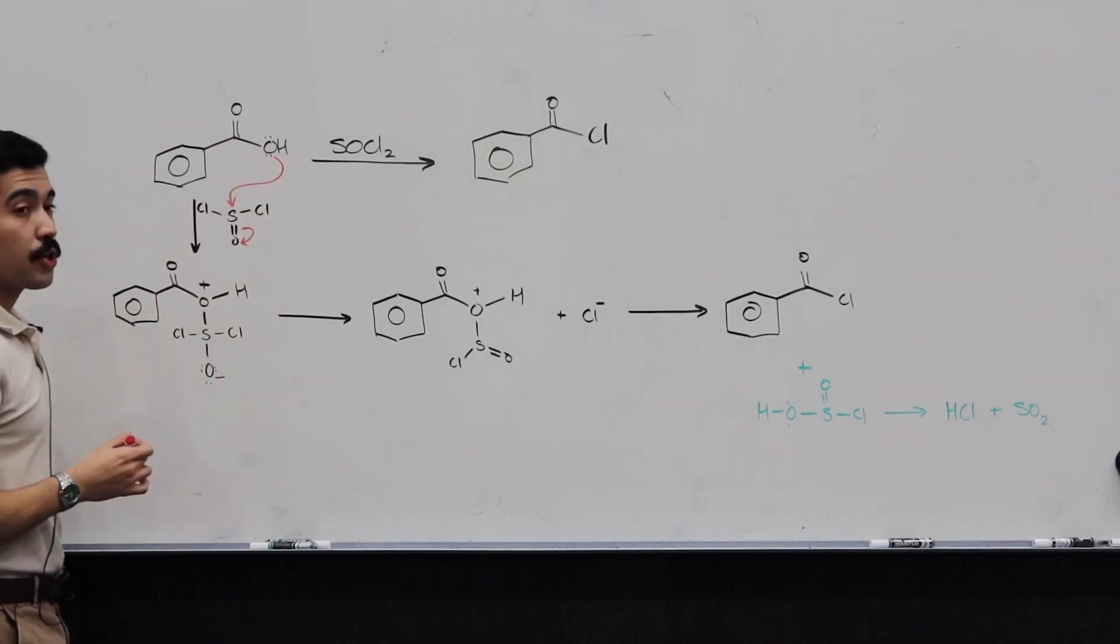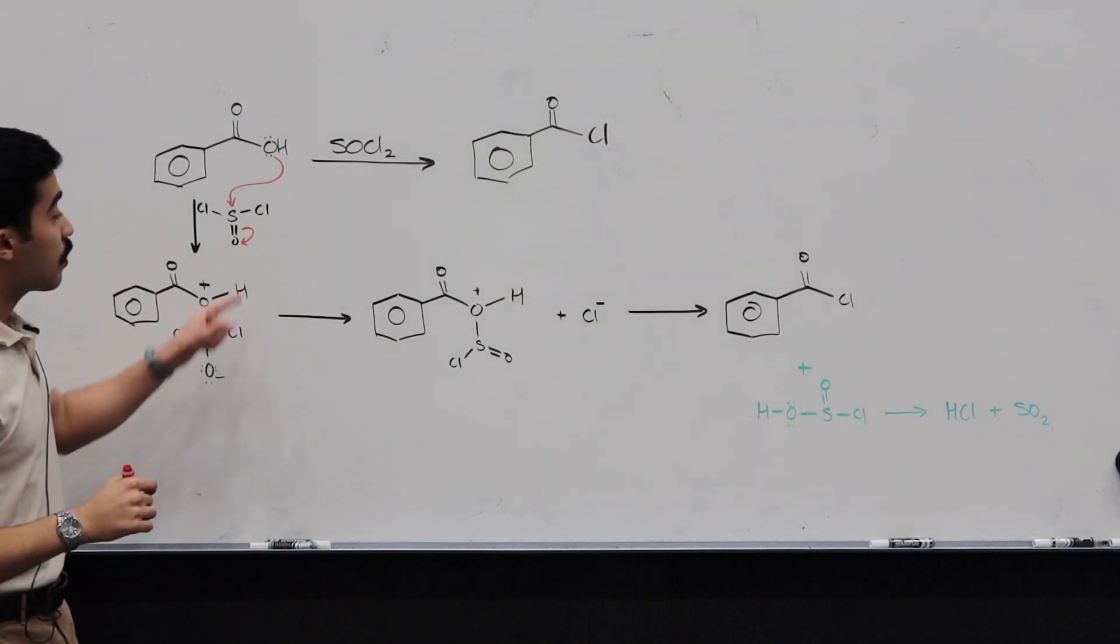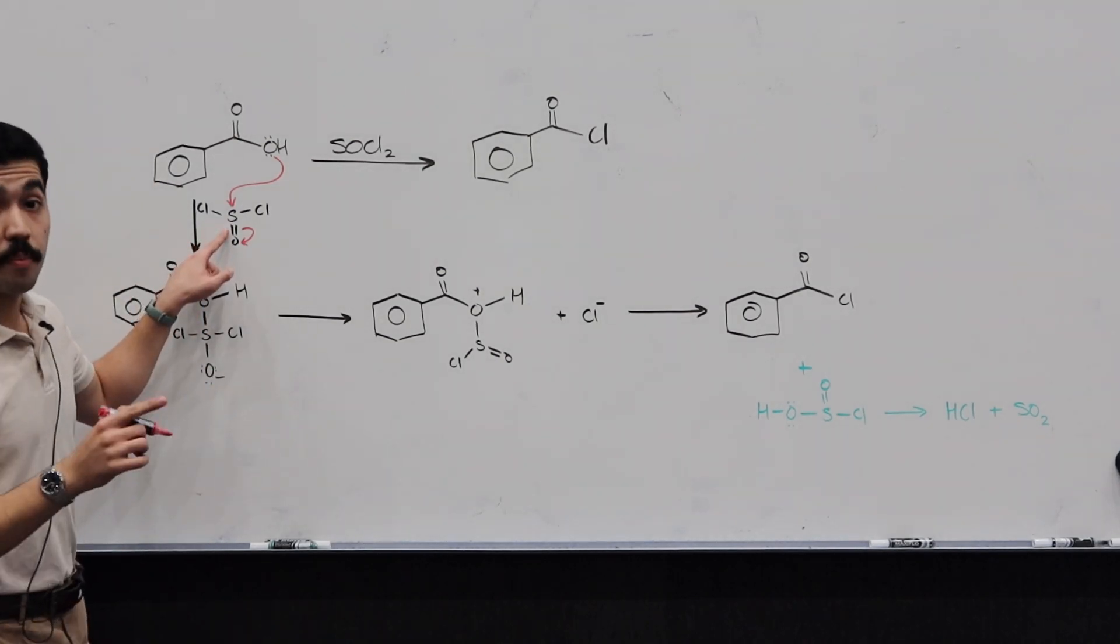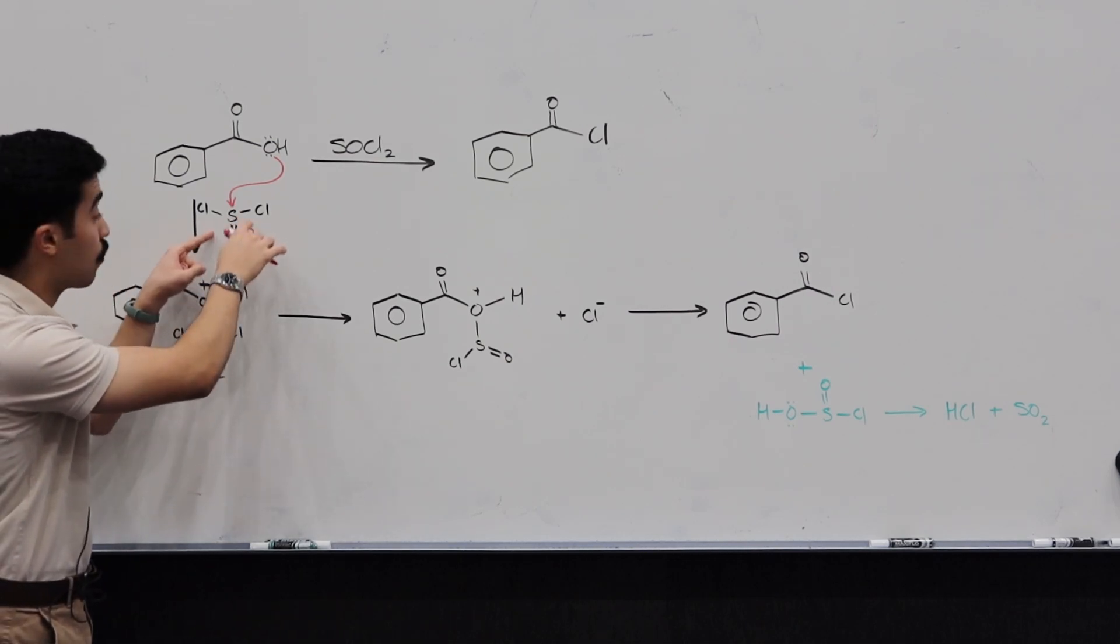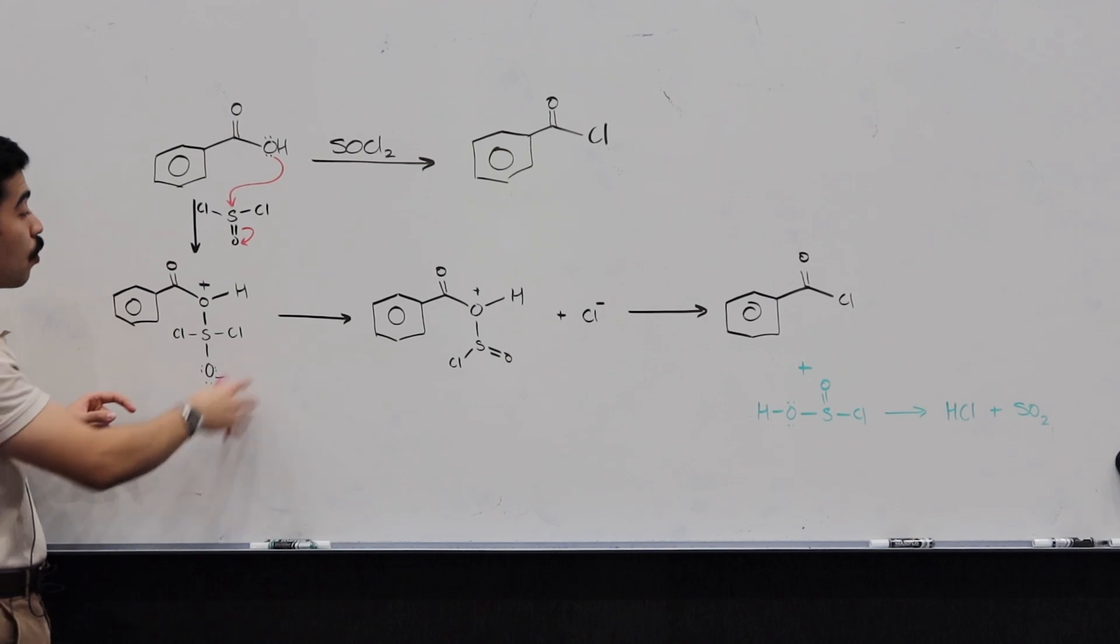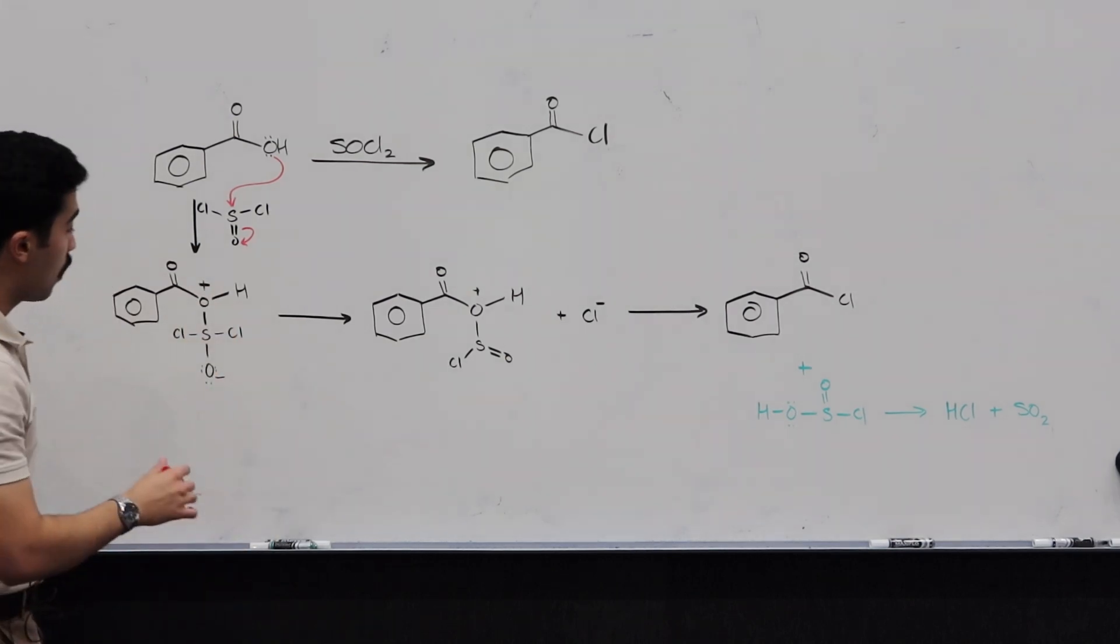We know that when oxygen has three bonds, it's going to have a charge of plus, which we've done here. We know that we've broken a double bond, so the electrons have collapsed from this sulfur to this oxygen, so from this bond, rather, to the oxygen, forming our O-. Overall, plus, minus, zero. So in terms of charges, we're very happy.